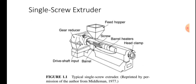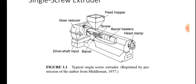A typical single screw extruder is shown in the figure. Its components include a gear reducer, feeder, feed hopper, screw, barrel heater, head, drive shaft input, and barrel. This figure shows the typical configuration of a single screw extruder.